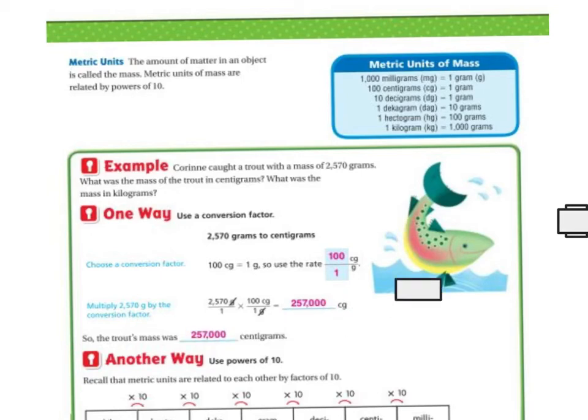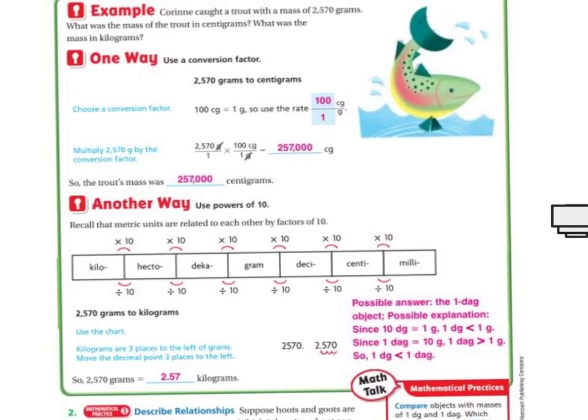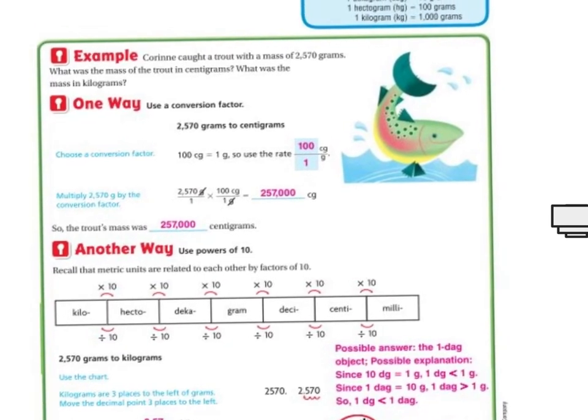So the trout's mass was going to be 257,000 centigrams. If you are doing powers of 10, let's look at this. We were doing grams to centigrams. So that means I'm going this way, 1, 2 spaces. So I've got 2, 5, 7, 0, and I've got to go 1, 2 spaces.